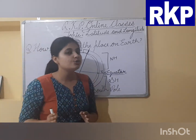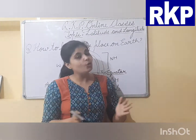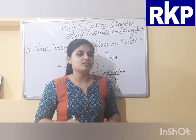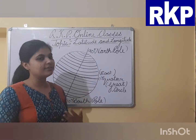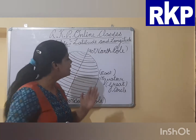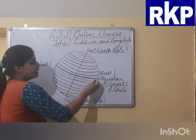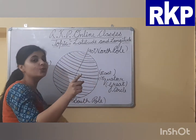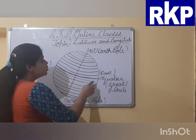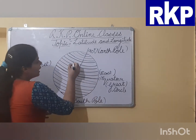On maps and globes you are going to find so many lines — some horizontal lines, some vertical lines — and all these lines are helpful to us in finding the absolute location of any place. Now we will discuss about latitudes. Latitude is any imaginary line that runs from east to west. As you can see, these are latitude lines — imaginary lines. You are not going to find these lines on earth; they do not exist.